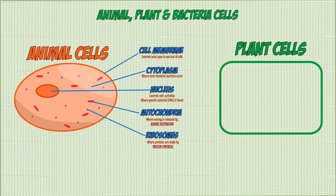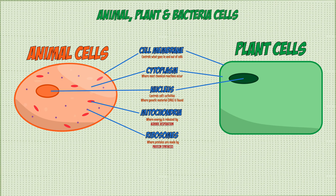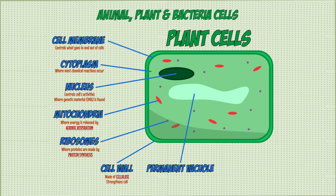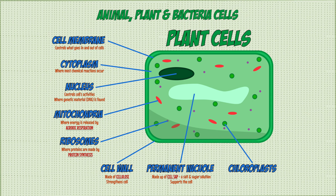Plant cells have a more rectangular shape and contain everything an animal cell has, including cell membranes, cytoplasm, nuclei, mitochondria and ribosomes. But they also have three extra structures. They have a rigid cell wall made of cellulose, which strengthens the cell and allows it to keep its shape. They also have a permanent vacuole containing cell sap — a solution of sugar and salt that helps support the shape of the cell. Lastly, plant cells contain chloroplasts where photosynthesis happens, made up of a green pigment called chlorophyll that absorbs sunlight and gives plants their green colour.